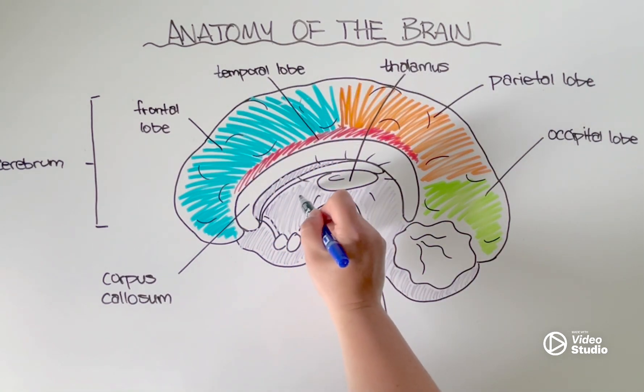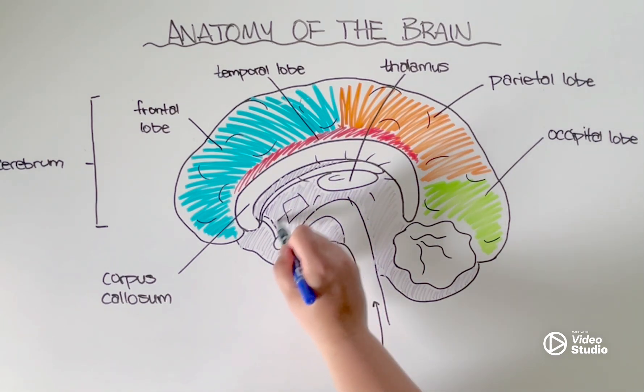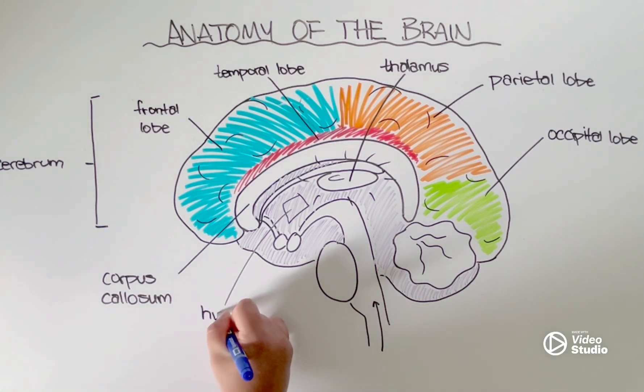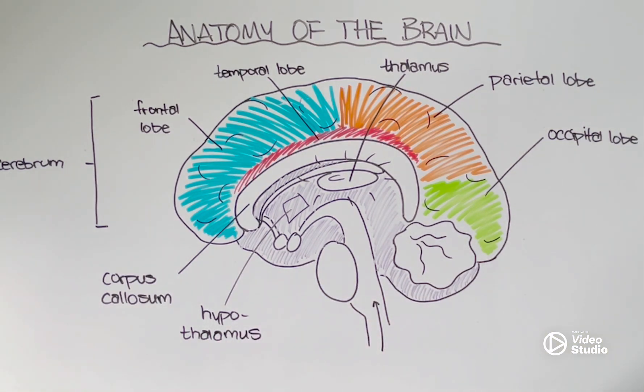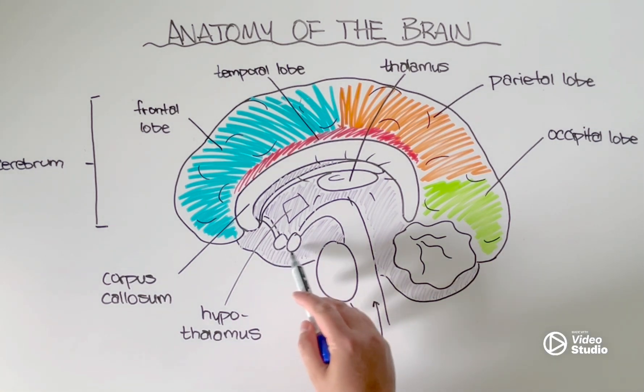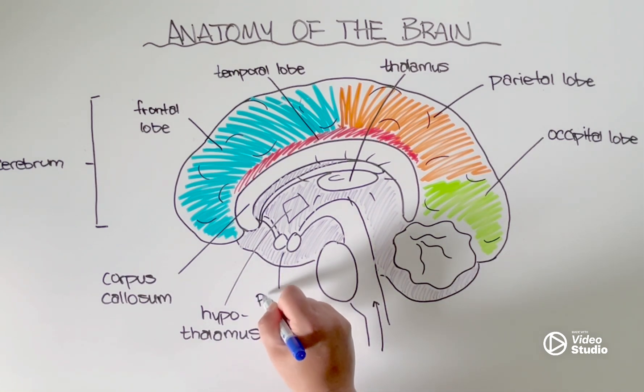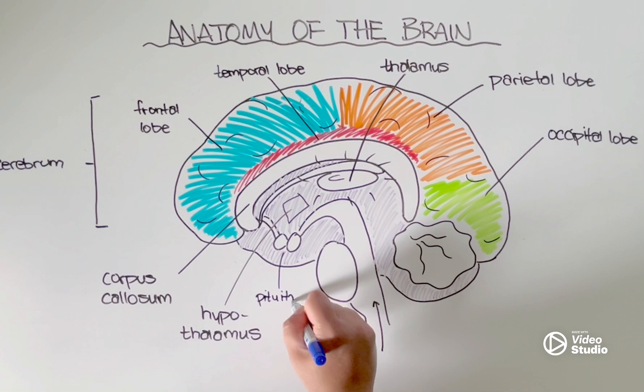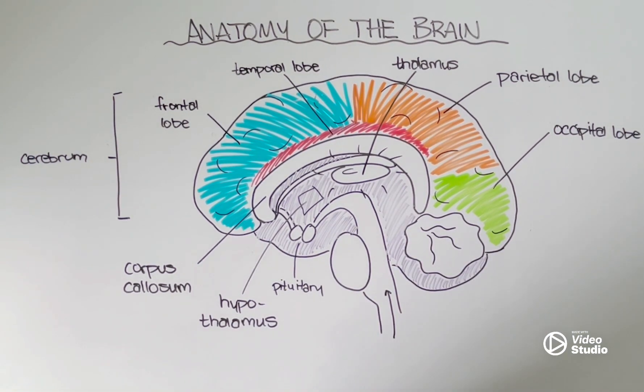And then, directly below the thalamus, kind of in this diamond-shaped region here, we have a structure known as the hypothalamus. And the hypothalamus has a lot of really important roles. One of the things that it does is it helps to regulate this structure down here, known as the pituitary. However, the hypothalamus also plays other roles in maintaining homeostasis within our bodies, such as regulating our appetite, our thirst, as well as our internal body temperatures.